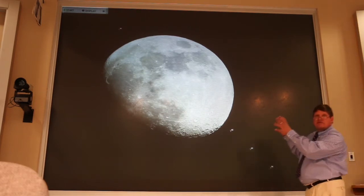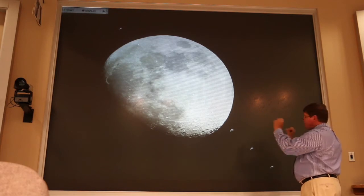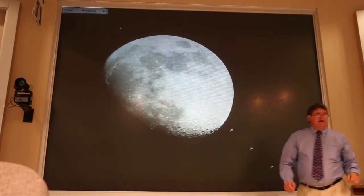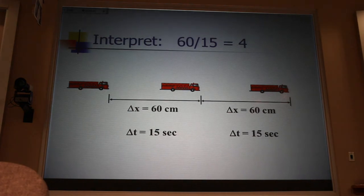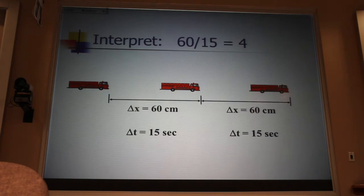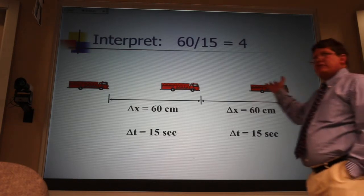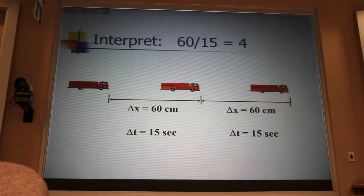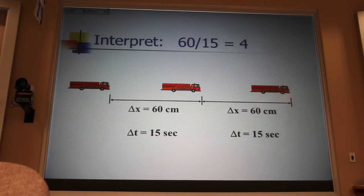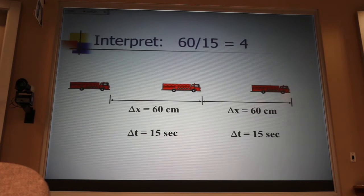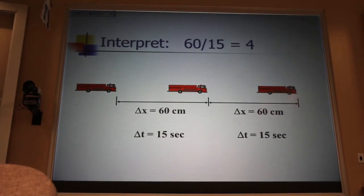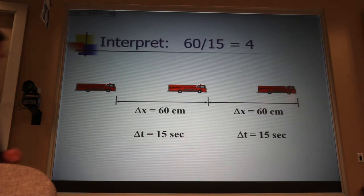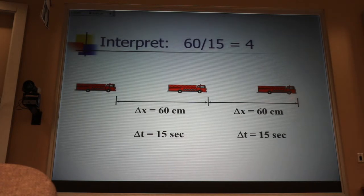You can see that this is a strobe photograph and you can see that with equal intervals of time we're covering equal distances. Now what if I took the number 60 and divided it by the number 15, getting the number 4? What does that number 4 tell me about this motion? What interpretation can you give this number 4? Four centimeters per second. I would pronounce it a little differently: four centimeters for each second. It's how far this truck is getting down the road for each one interval of time.